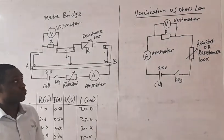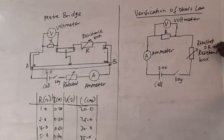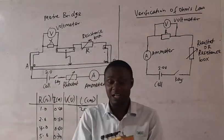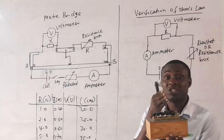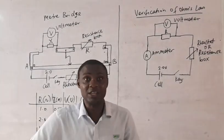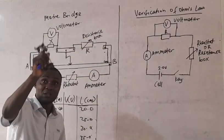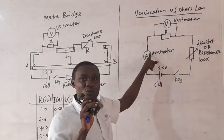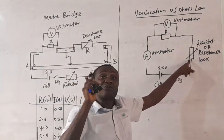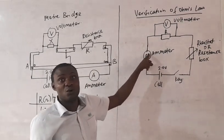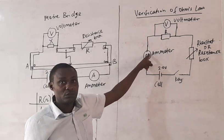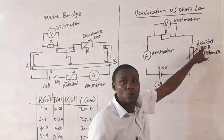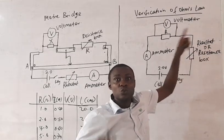Now what do you do? Here you can see that I wrote 'rheostat or resistant box' because the resistant box can perform the duty of the rheostat. The issue is that for the resistant box, you will be asked to set the resistance to a particular value. But for the rheostat, you will not be asked to set it to any particular value — you will be asked to adjust it to determine the current flowing through the ammeter.